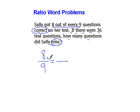now this is eight correct out of nine total, right? If there were 36 test questions, is that 36 correct or is that 36 total? Well that's 36 total, so that number goes on the bottom since the nine total went on the bottom of this fraction.